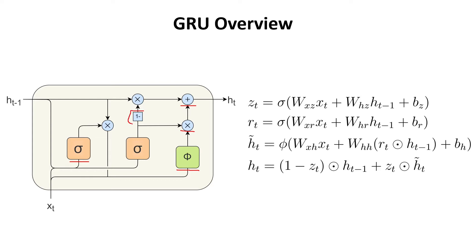What is different, however, is this operation here: 1 minus. But this one is pretty simple — it does what it looks like. It takes a vector as input and outputs 1 minus that vector.